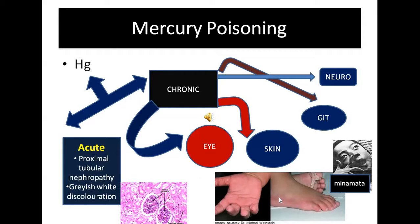In the GIT, chronic mercury poisoning leads to dysentery and membranous colitis, which resembles diphtheritic colitis. There is also a blue-black line on the gum, which resembles the Burtonian line — a stippled blue line on the gum seen in late poisoning.